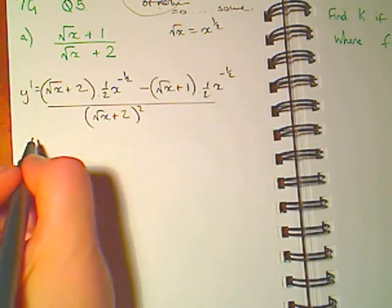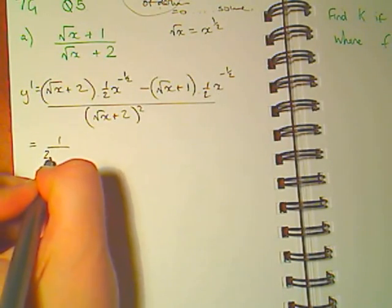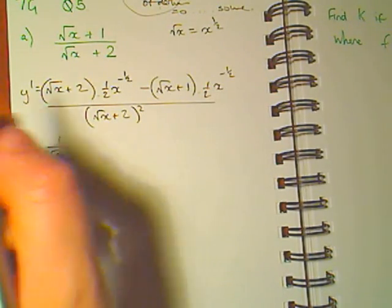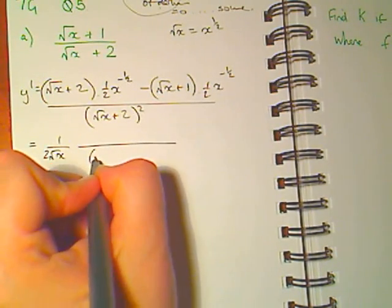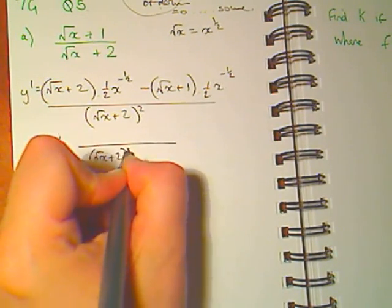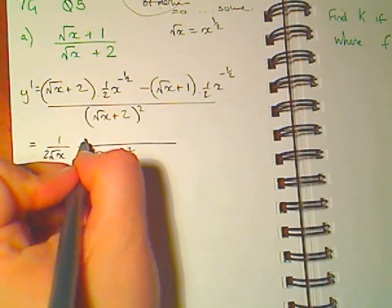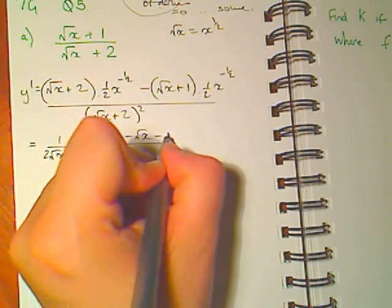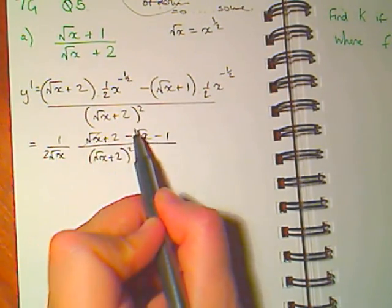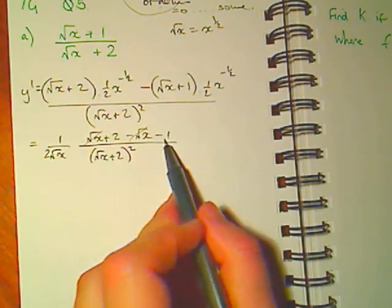Here I have a common factor. Leaves me with the square root of x plus 2 minus the square root of x minus 1. These bits will cancel out. 2 minus 1 is 1.